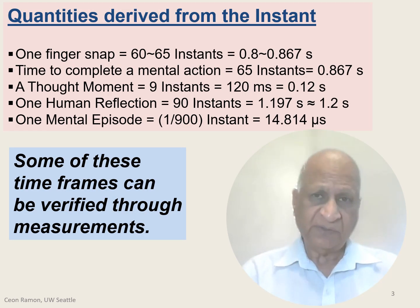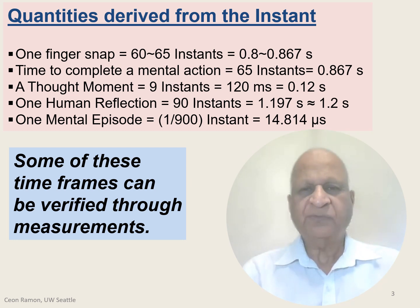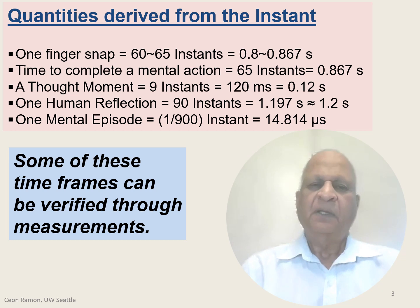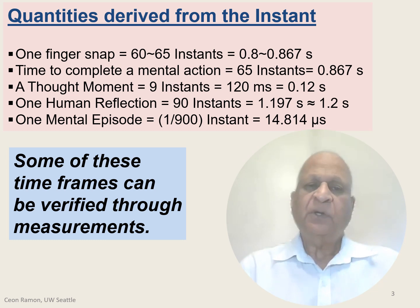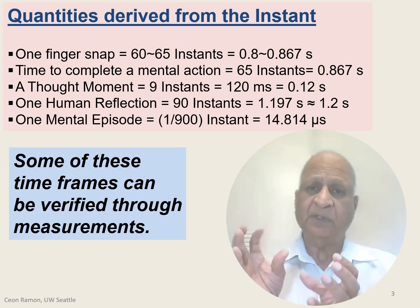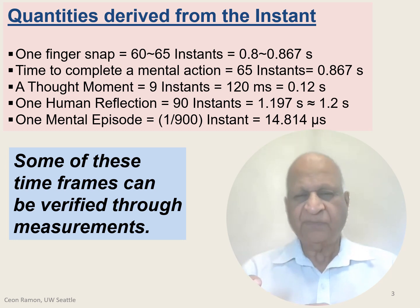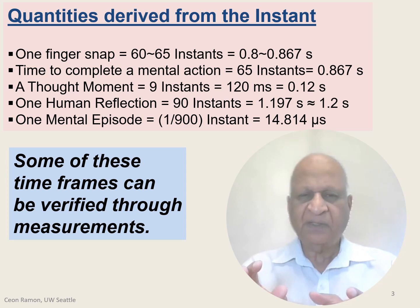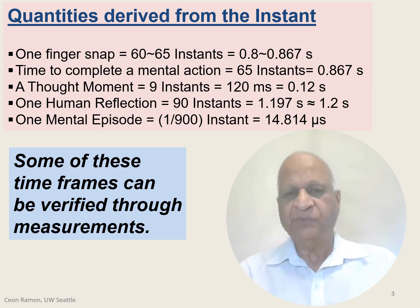From the definition of instant, many other quantities were derived. A finger snap was one of the standard measures used by Buddhist philosophers in place of a clock. A finger snap comes out to be about 60 to 65 instants, which is about 0.8 to 0.867 seconds. A complete mental action is similar to a finger snap and is about the same timeframe. A mental thought is defined as 9 instants, equal to 120 milliseconds, which in EEG research is interesting because the first impression of an object in the visual cortex shows up between 80 to 130 milliseconds — so 120 milliseconds falls within that frame.